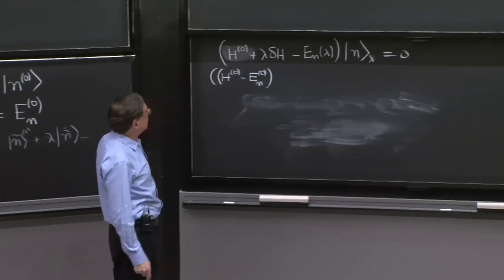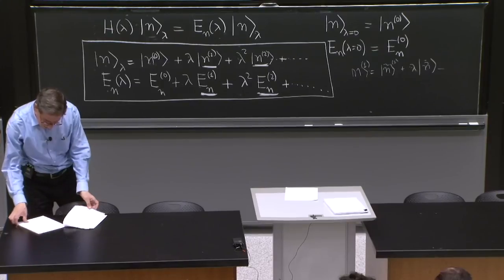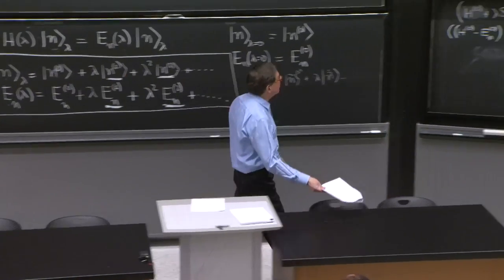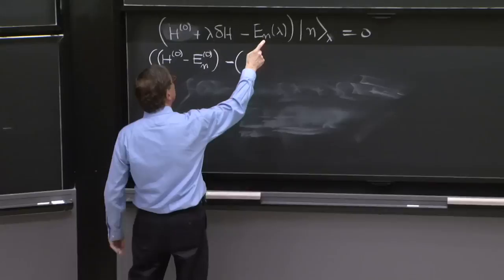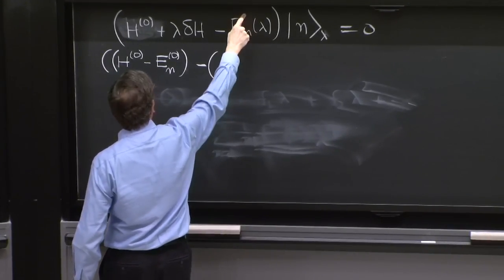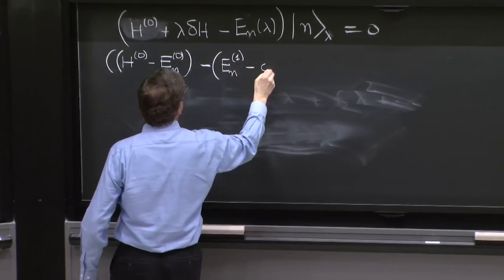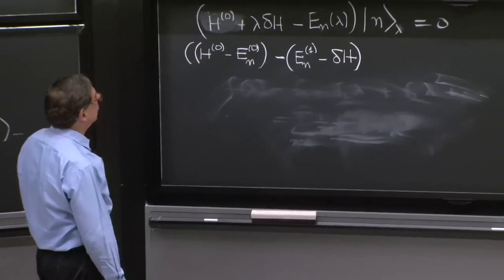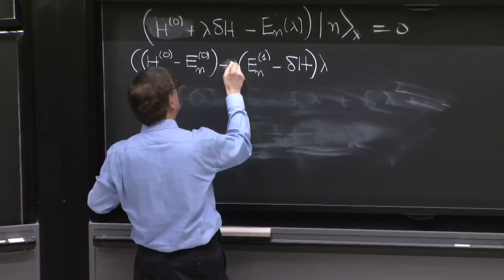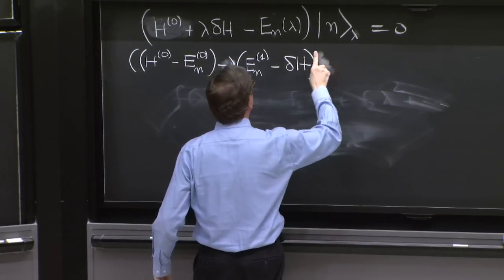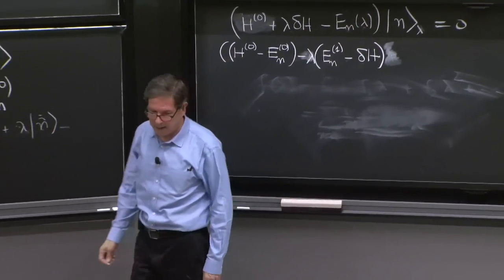Now let's look at the terms with a lambda. So with a lambda, we have minus. From here, we have a term En1 minus delta H. That is all the terms with a lambda. So I should put a lambda as well here. Probably want to put it in front. Minus lambda times that. En1 from there. And the lambda delta H with a double minus sign.